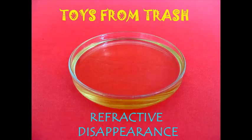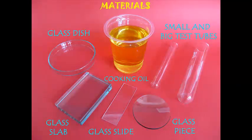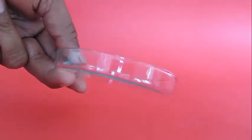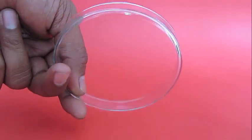You might have wondered how things become invisible. Here is a simple experiment you can do to make things disappear. You need some cooking oil, a glass dish, some test tubes and pieces of glass.